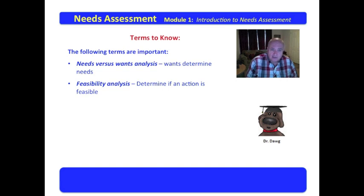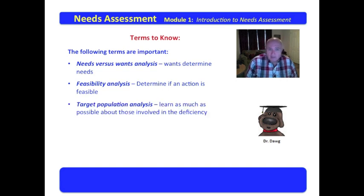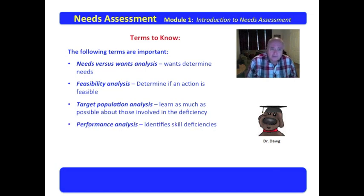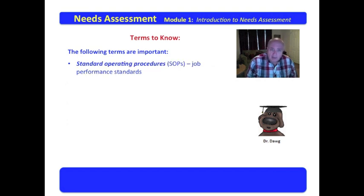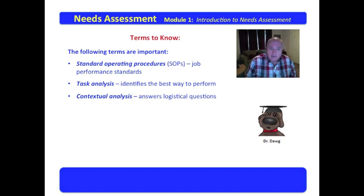A feasibility analysis determines if an action is feasible. A target population analysis lets you learn as much as possible about those involved in the deficiency — population referring to a group of interest. Performance analysis is utilized to identify skill deficiencies, standard operating procedures (SOPs), or job performance standards. Task analysis identifies the best way to perform something. Contextual analysis answers logistical questions that may arise in the process of developing a deficiency plan.